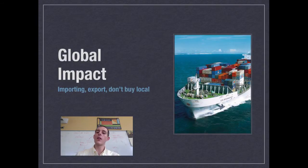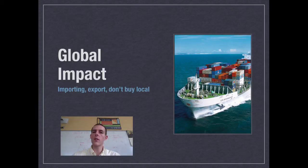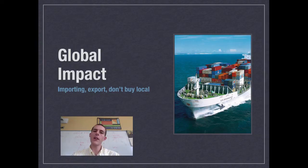Developed countries — global players, G20 countries — have a global-scale impact. While we produce some things within our borders, a lot of what we get is imported. The average piece of fruit or vegetable on your plate has traveled somewhere between 1,000 and 1,500 miles just to get to you. Rather than producing locally, we outsource that to other places, making them deal with the associated pollution. Our impact is also felt through transporting goods, which releases pollution into air, water, and soil — affecting global systems like the carbon cycle and water cycle.